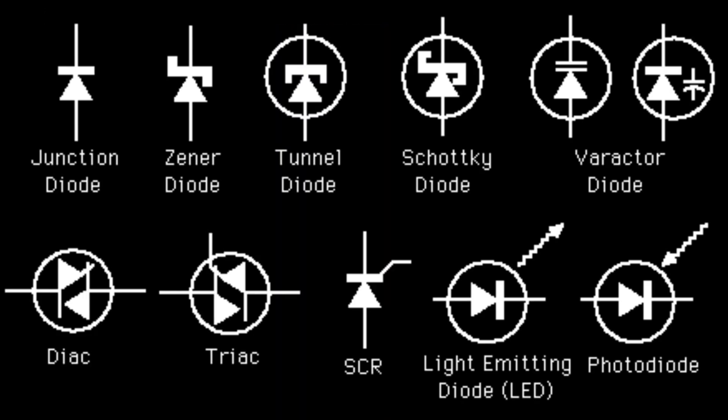Here are the schematic symbols of diodes. The symbol is quite intuitive. The arrow direction aligns with the forward direction.